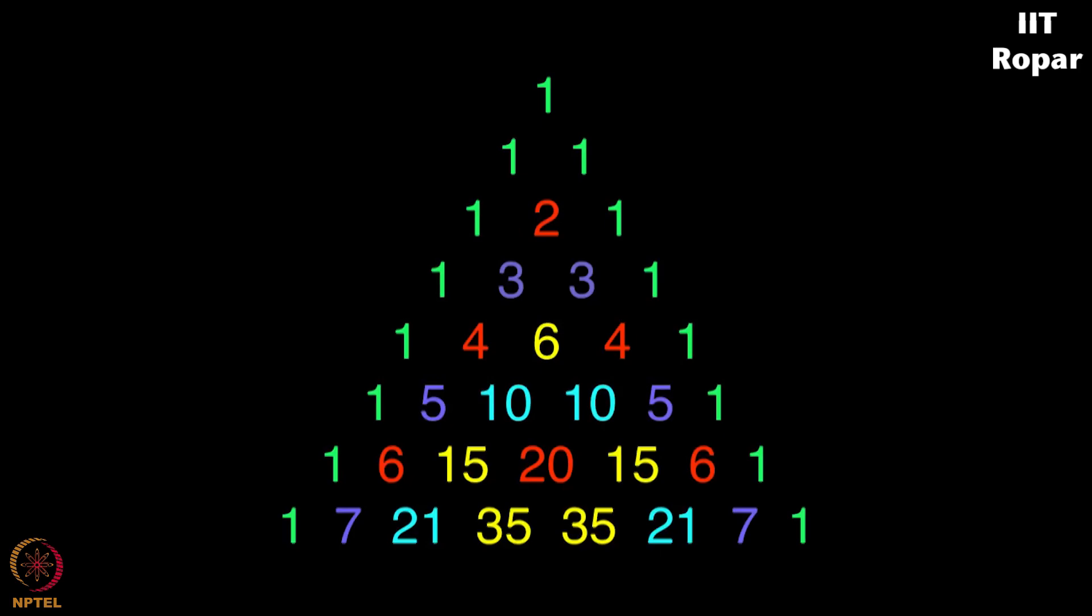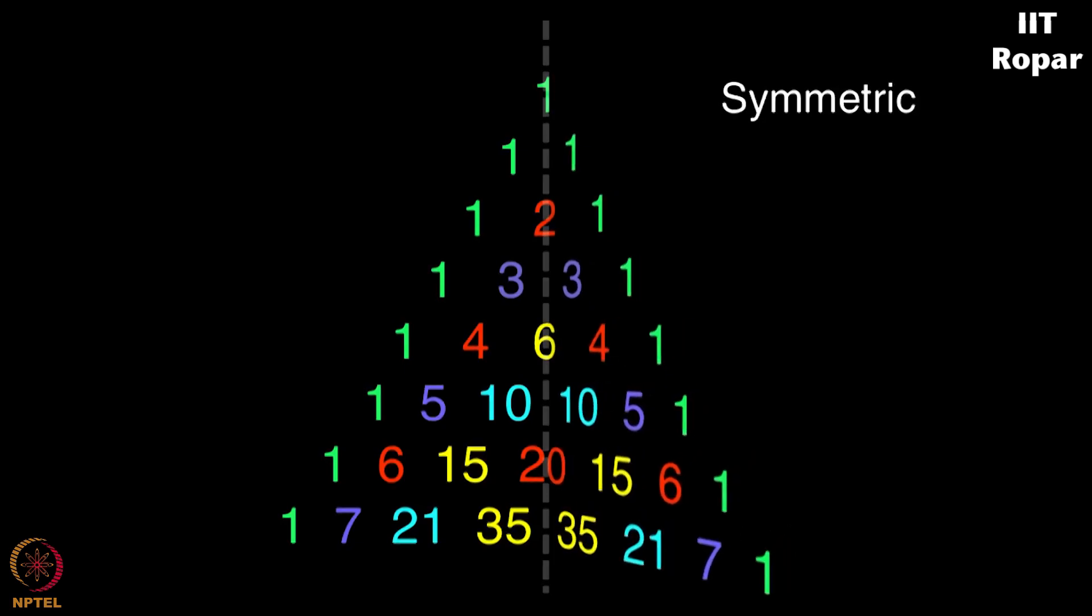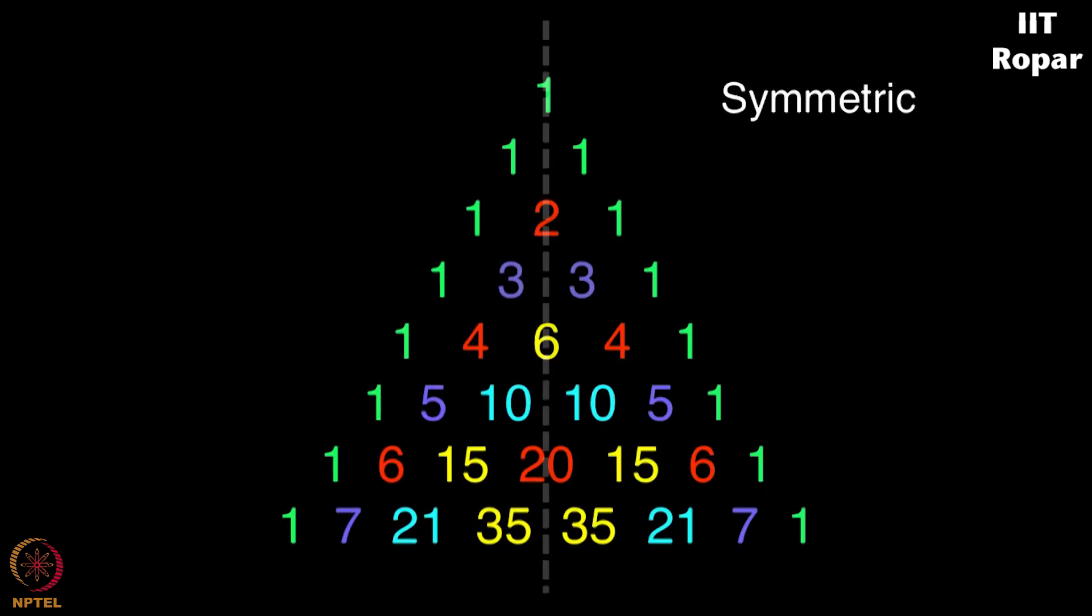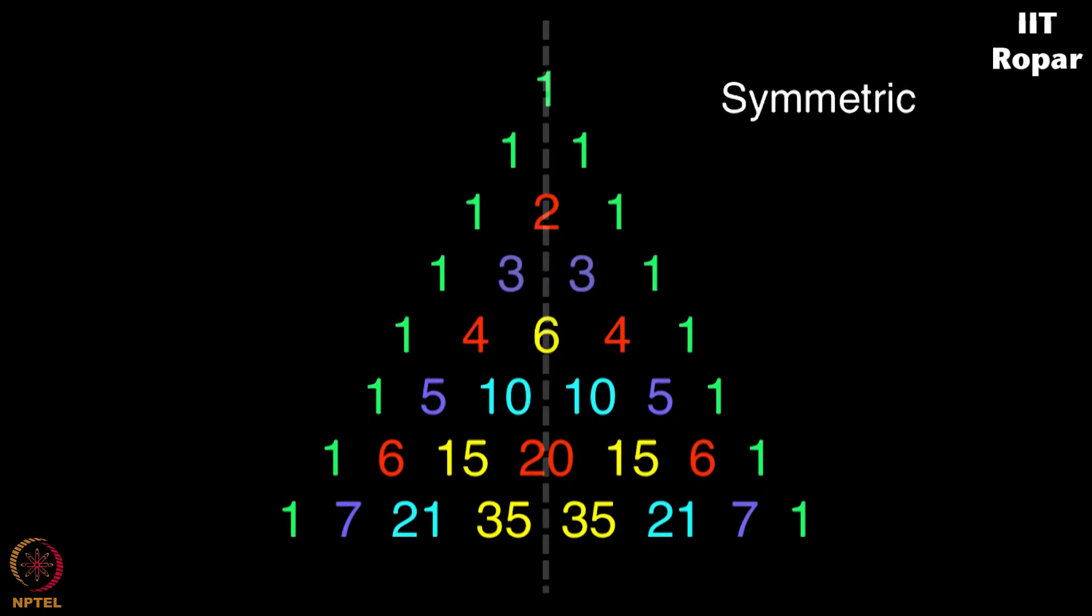You can also see that the triangle is symmetric. What do I mean by symmetric? If you keep a mirror on 1, 2, 6, 20 and 70, that is on this line, what you have on the left hand side is same as what you have on the right hand side, it is symmetric.